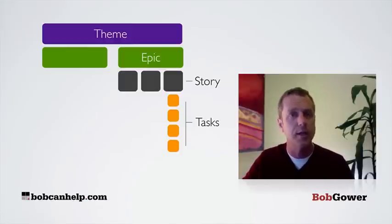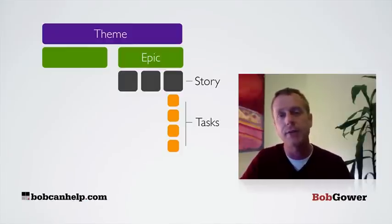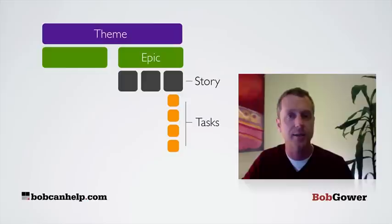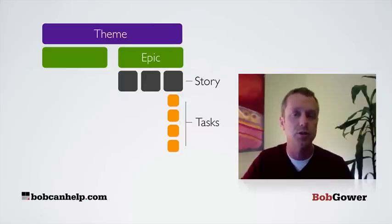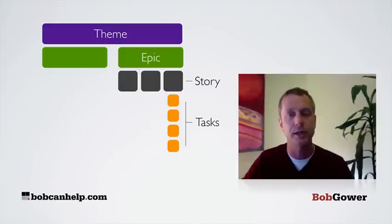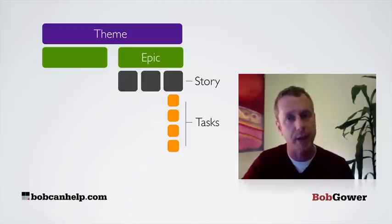So a story needs to be developed during a sprint. And finally, we have tasks. Tasks are all of the things that the development team needs to do in order to make that story happen, to fulfill that story and reach the done stage so they can deliver back to product.